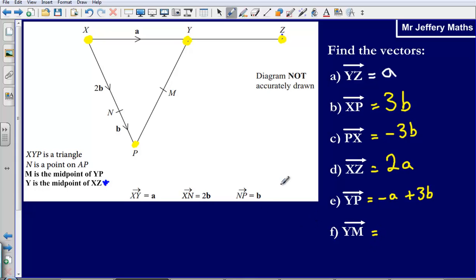Last one, Y to M. We've just worked out what YP was, we worked out that vector coming down here. And we did that by going back on ourselves and then down.